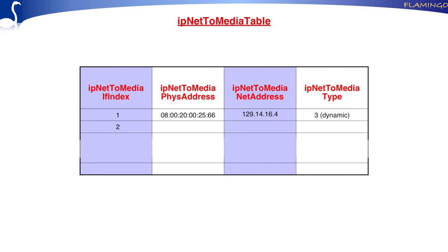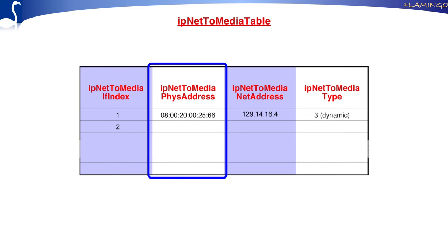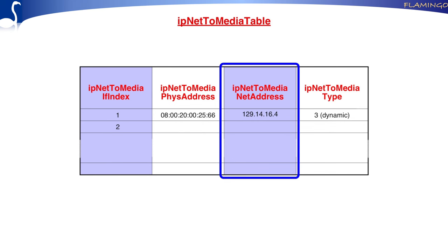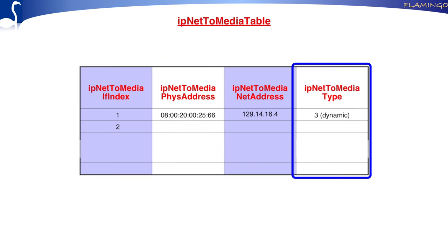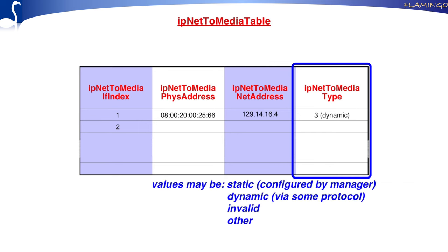The previous table mapped from IP address to interface; here we can map from interface to MAC address. We have the interface index, the MAC addresses, and the IP addresses. The interface index and IP address together form the index, so if you know your IP address you can easily find the MAC address. There is also a type field indicating if the address was configured by the manager, is static, or was obtained dynamically via a protocol.